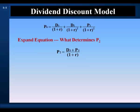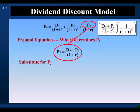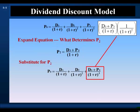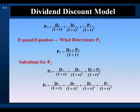The buyer of the stock at year 2 would be looking at the dividend received in year 3 and its terminal price at the end of year 3. The price at year 2 is equal to the year 3 dividend, plus the year 3 terminal price, discounted back 1 year to year 2. Let's substitute this definition of P2 for the year 2 terminal price in our model. The price of the stock at time 2 is discounted back 2 years to the present, and we get this expression. Rearranging, we have the present value of a series of dividends, and the terminal price is being pushed further into the future.